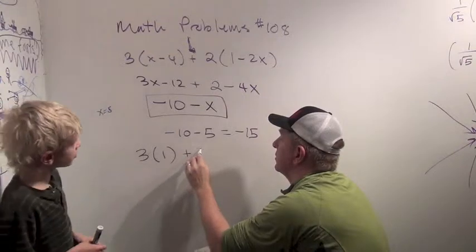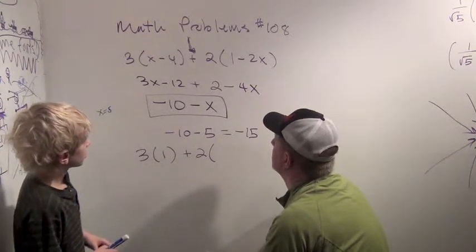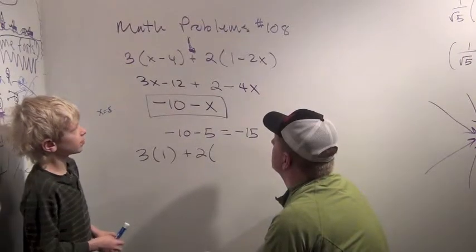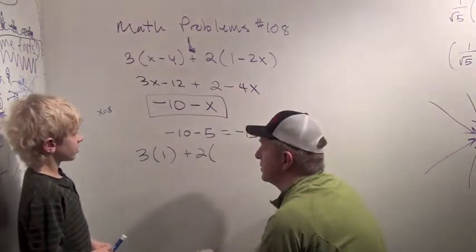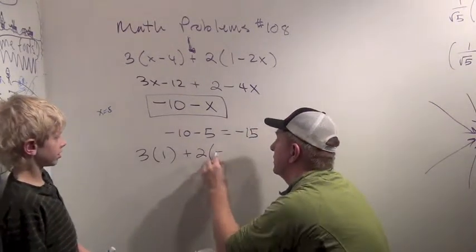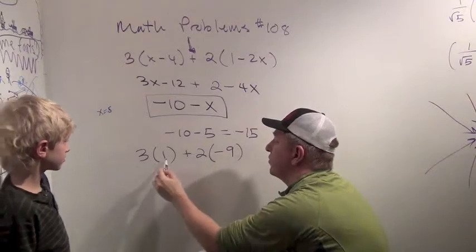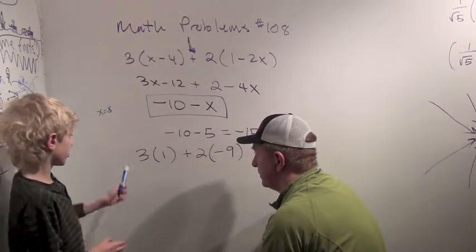And plus two times one minus ten. It's one minus ten. So that's minus nine. Okay. Three times one plus two times minus nine. Okay. Yep.